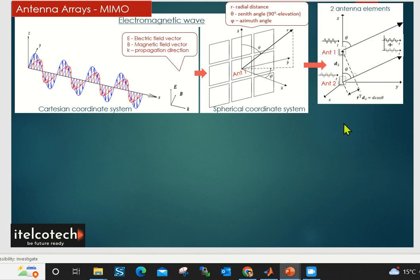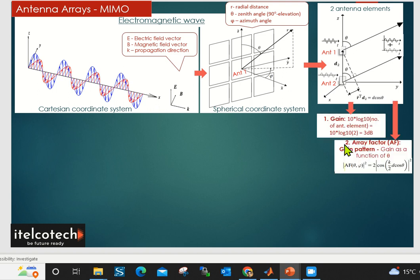We are considering an example of two antenna arrays here, two antenna elements, and how it is going to change the gain and the pattern as compared to that of a single antenna element. Now the gain is a logarithmic value. We can see that as we keep on increasing the number of antenna elements, it will give us higher gain. As compared to a single element, it will give double the gain or double the transmit power at a particular place.